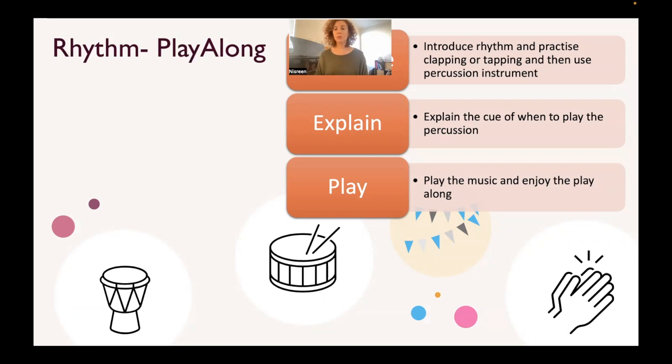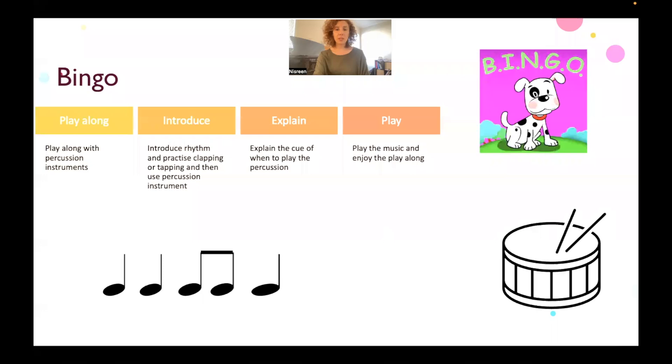Let me give you an example. Let's say we're doing BINGO. I can use maybe a big picture of the rhythm, and then I will model the rhythm by clapping B-I-N-G-O, and then the student will practice back and forth. Then we can use percussion instruments and talk about the cue, so maybe this sign means stop and this sign means play. So let's try: are you ready? And then we go B-I-N-G-O and we stop.